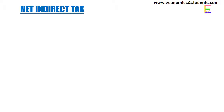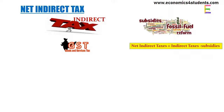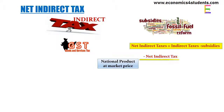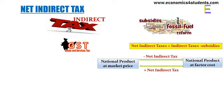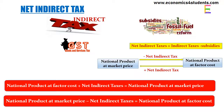The difference between market price and factor cost emerges due to indirect taxes and subsidies. Indirect taxes are taxes on goods and services, such as GST. Subsidies mean financial assistance given by the government. The difference between indirect tax and subsidy is called net indirect tax. Net indirect tax is deducted from national product at market price to get national product at factor cost, and net indirect tax is added to national product at factor cost to get national product at market price. Therefore: national product at factor cost plus net indirect tax equals national product at market price, and national product at market price minus net indirect tax equals national product at factor cost.